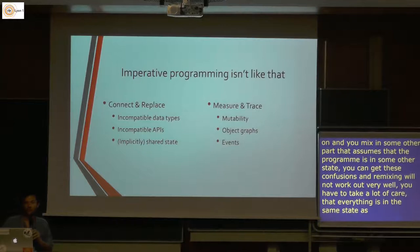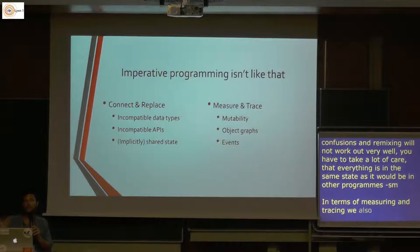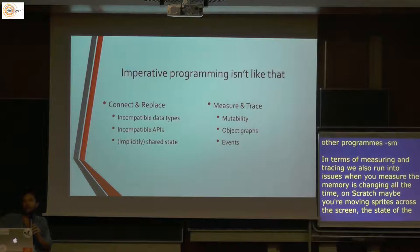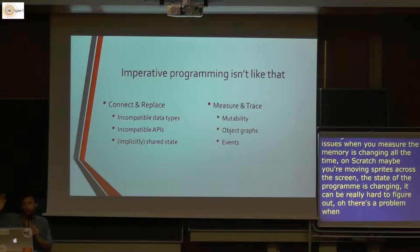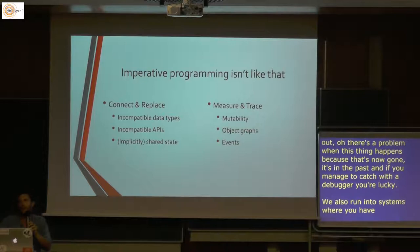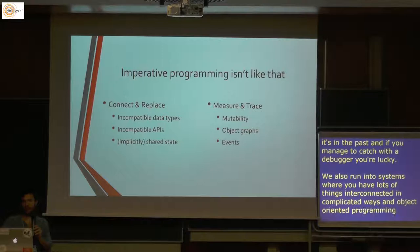In terms of measuring and tracing, we also run into issues. The memory on your computer can be changing all the time — in Scratch you're moving sprites across the screen, the state of your program is changing constantly — it can be really hard to figure out 'there's a problem only when this particular thing happens' because that thing is now gone. If you manage to catch it with the debugger you're very lucky. We also run into systems where things are interconnected in very complicated ways, and object-oriented programming and event systems are particularly problematic for that.